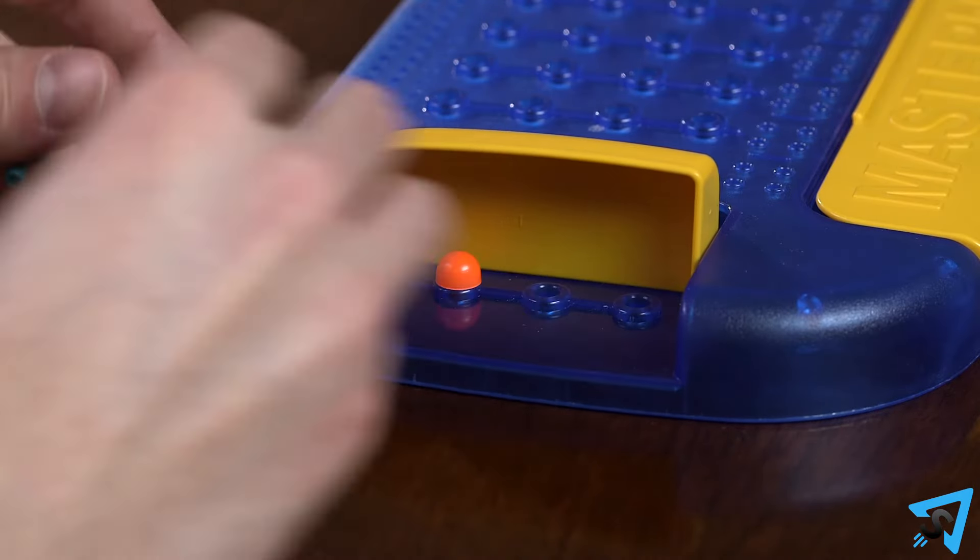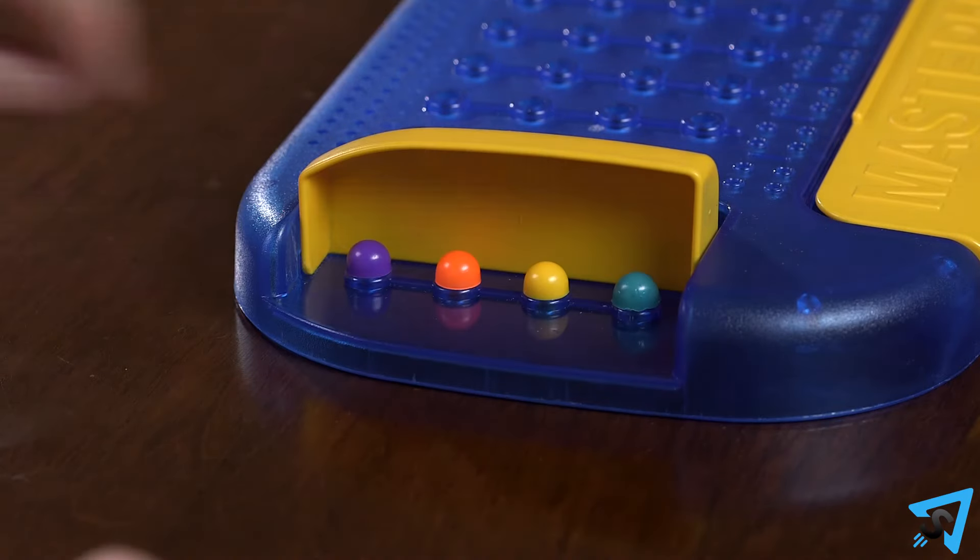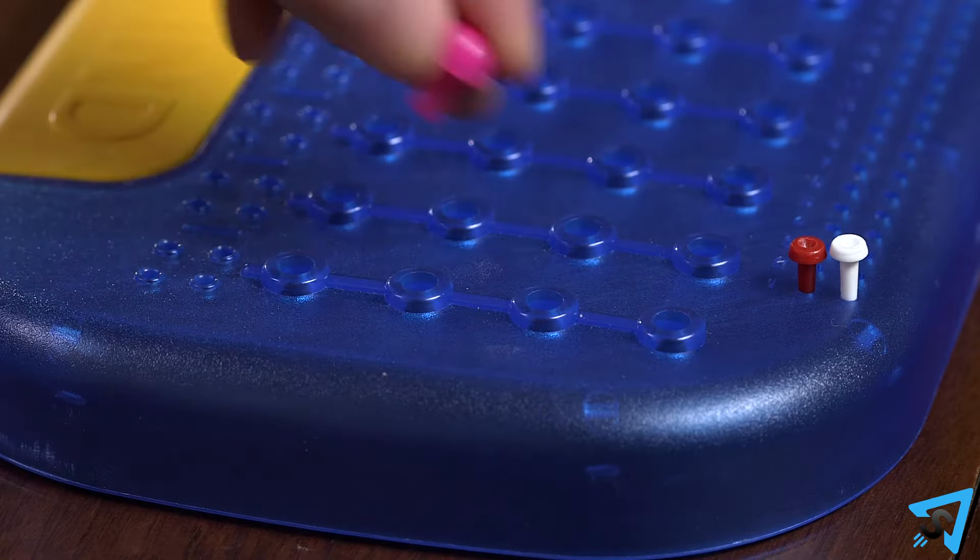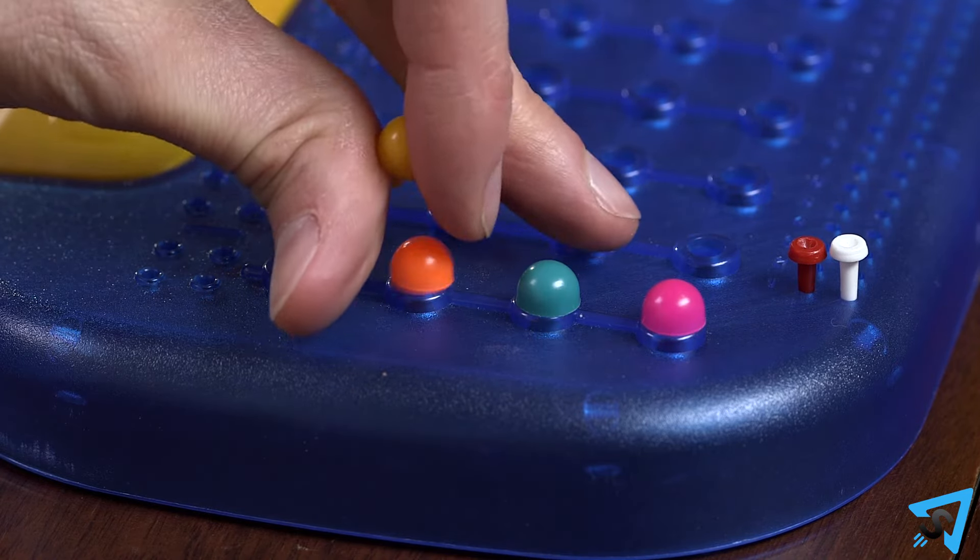The code breaker looks away until the code maker makes a code of colored pegs behind the secrecy screen. Once finished, the code breaker turns around and places colored pegs into the empty row closest to him.